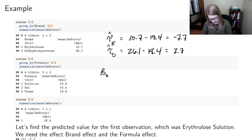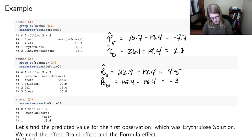And I could find my beta sub solution, and I guess I should have hats on these guys, beta hat sub solution. That's going to be the 22.9 minus 18.4, which I think is 4.5. And I could do beta sub gel, which would be 15.4 minus 18.4. So that should be negative 3. And beta sub cream, which is going to be 16.8 minus 18.4, negative 1.6.